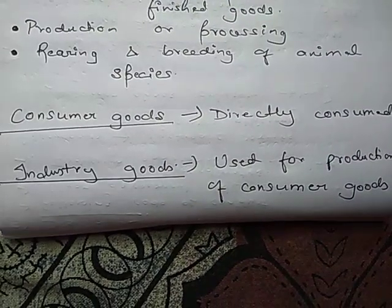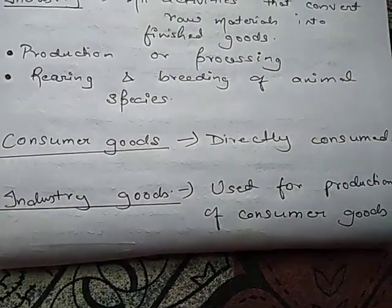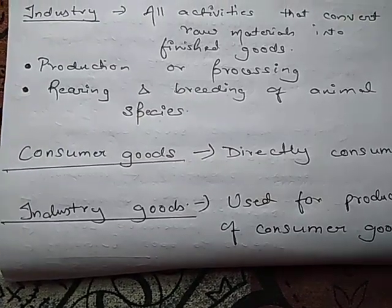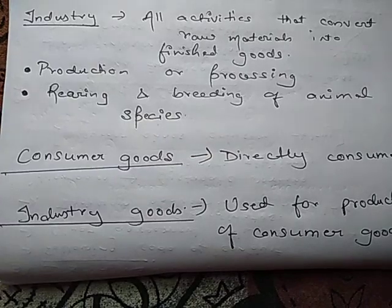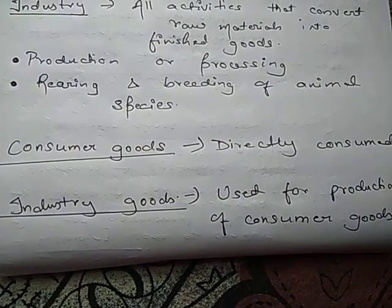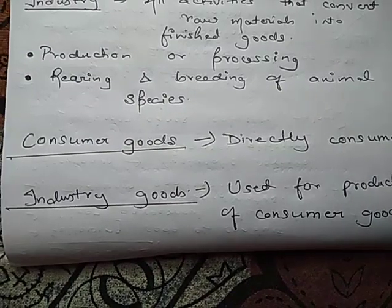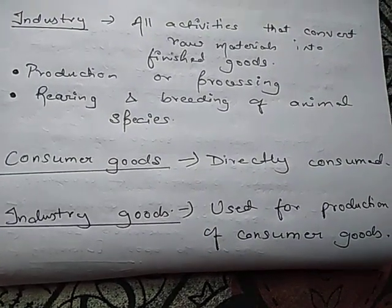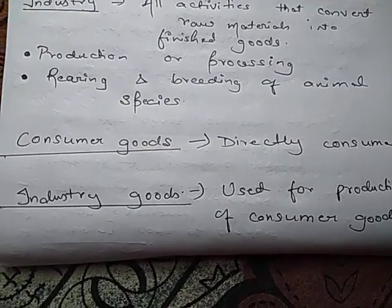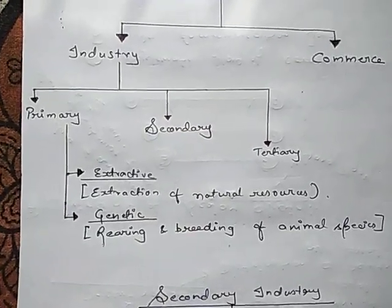Goods have two types. The first is consumer goods, which are directly consumed by us — things like pens, paper, clothes, anything you buy from the market. The second type is industry goods, which are used in the further process of production, like screwdrivers, tools, and machinery used for producing other goods. Industry goods are used for the production of other goods, while consumer goods are directly consumed by us.